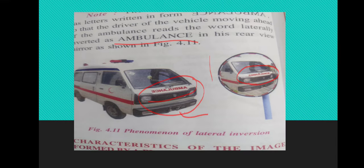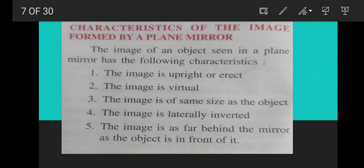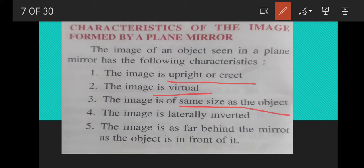Next, the characteristics of the image formed by a plane mirror: the image is upright or erect — as you see when you look at yourself. The image is also virtual, meaning you cannot take it on a screen. The image is of the same size as the object, and it is laterally inverted. The image is as far behind the mirror as the object is in front of it.